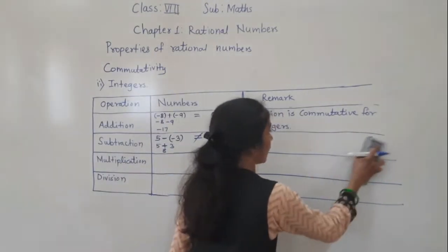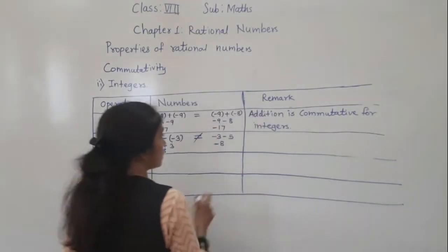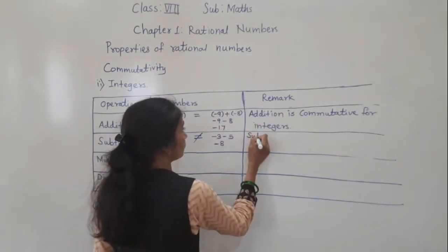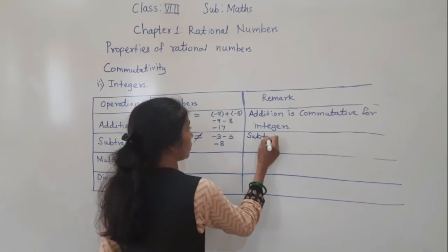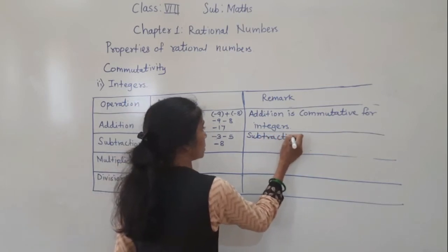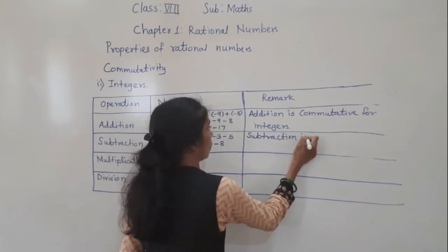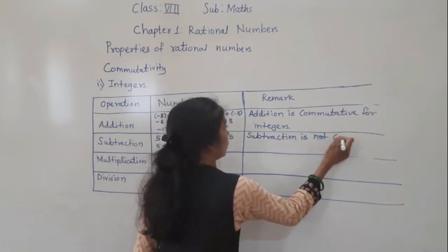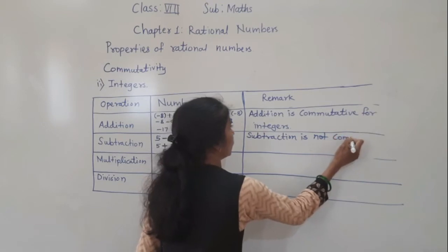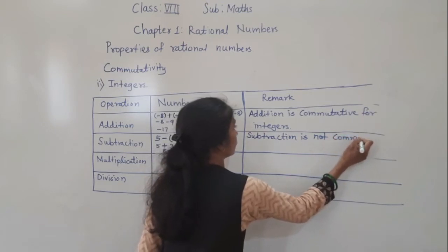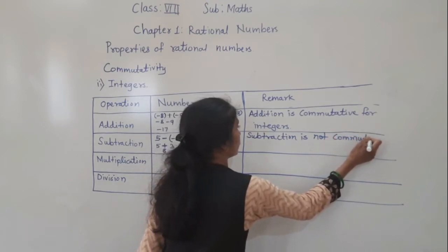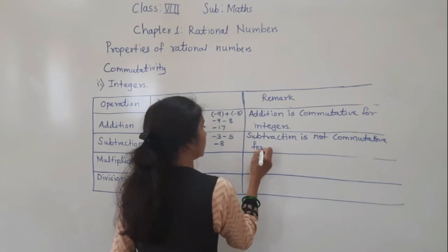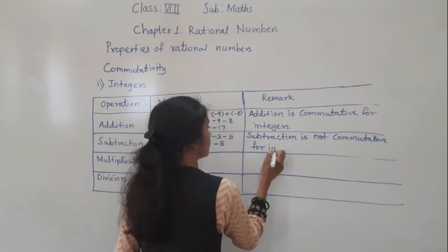So subtraction is not commutative for integers.